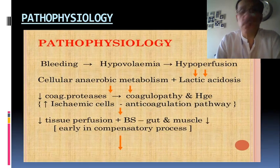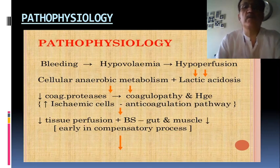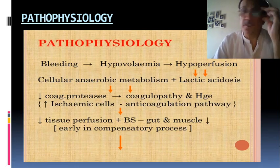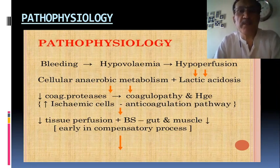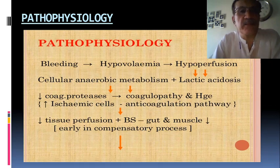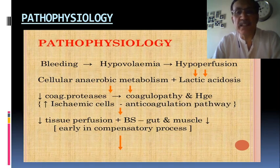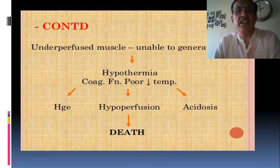Regarding pathophysiology, bleeding results in hypovolemia. Hypovolemia leads to hypoperfusion of the tissues. There is cellular anaerobic metabolism and lactic acidosis, which results in decreased coagulant proteases leading to coagulopathy and further hemorrhage. There is ischemia of the cell, anti-coagulation pathways are activated, tissue perfusion decreases, blood pressure decreases, and blood supply to the gut and muscle decreases. This is the early compensation that the body does.